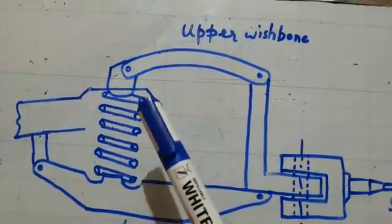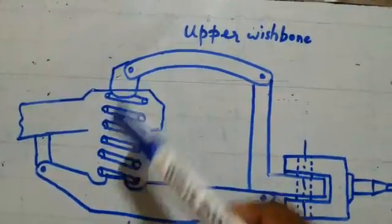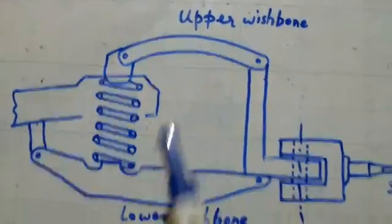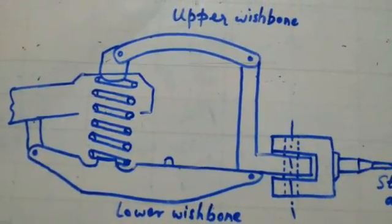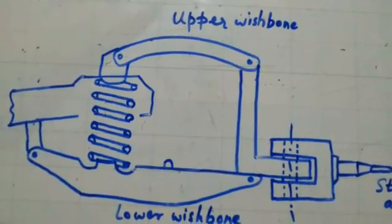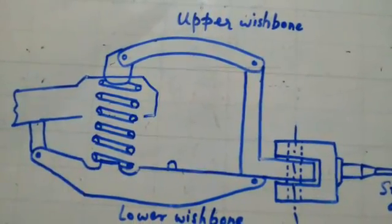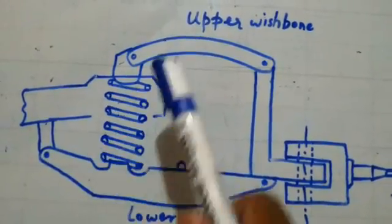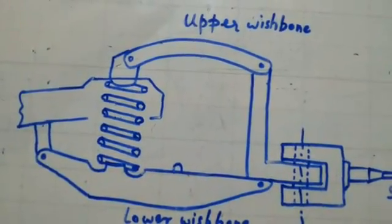Here you will have one helical spring between the two wishbones, the upper and the lower wishbones, with the support of frame member. So you have a helical spring between the two wishbones.